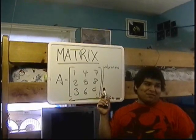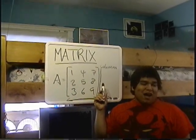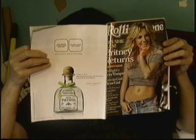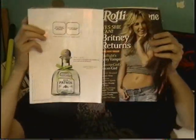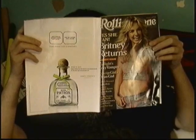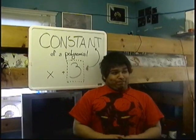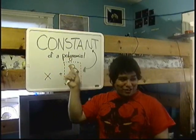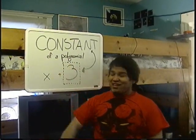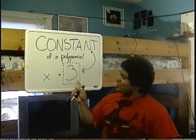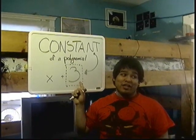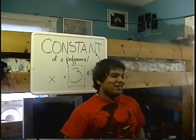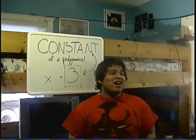The next word is constant — the constant of a polynomial. Here's the polynomial; there's the constant. The constant doesn't have a variable. Always remember that: it doesn't have a variable.